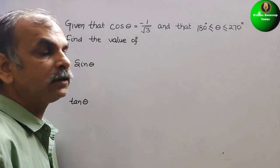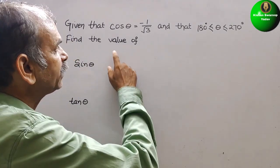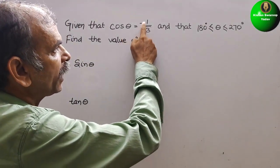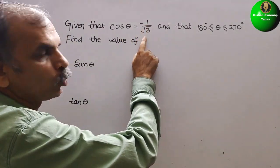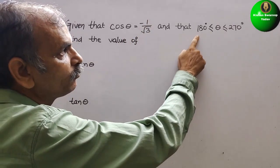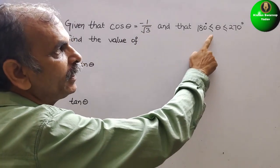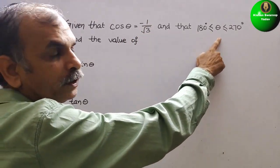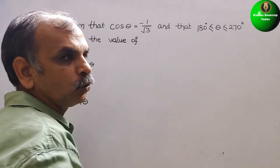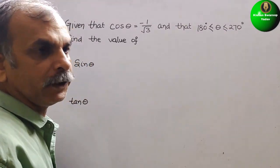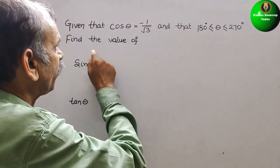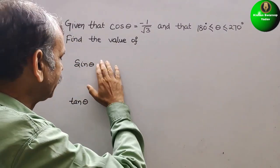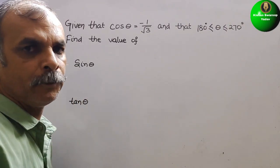Your question is: given that cos theta is equal to minus 1 by root 3, and that 180 degrees less than or equal to theta less than or equal to 270 degrees, find the value of sin theta and tan theta.